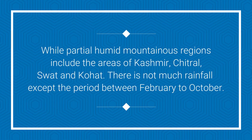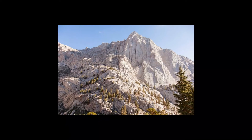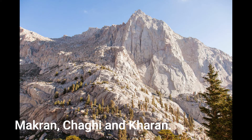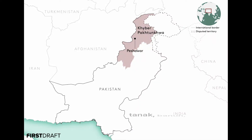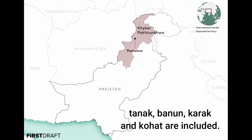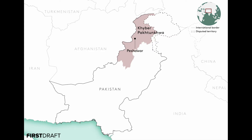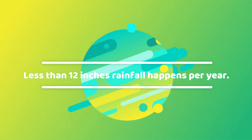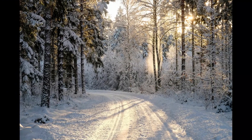Partial humid mountainous regions include the areas of Kashmir, Chitral, Swat and Kohat. There is not much rainfall except in the period between February to October. Dry mountainous regions include areas of Balochistan like Makran, Chagai and Kharan, and from KPK areas like Dera Ismail Khan, Bannu, Karak and Kohat are included. Less than 12 inches of rainfall per year occurs here.